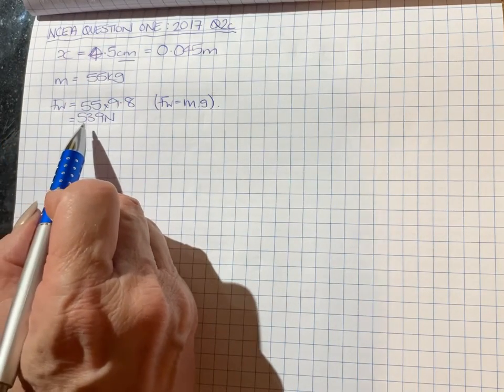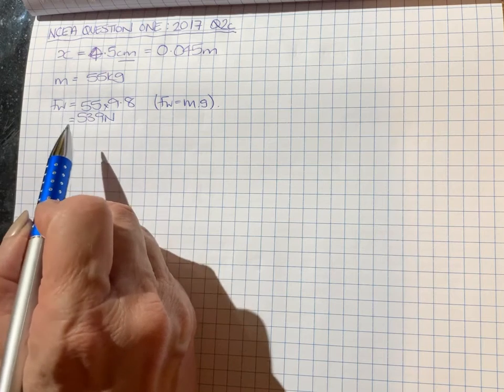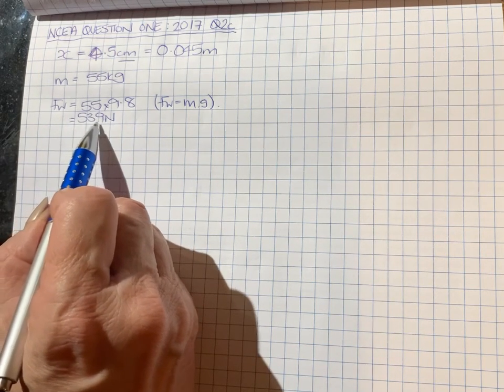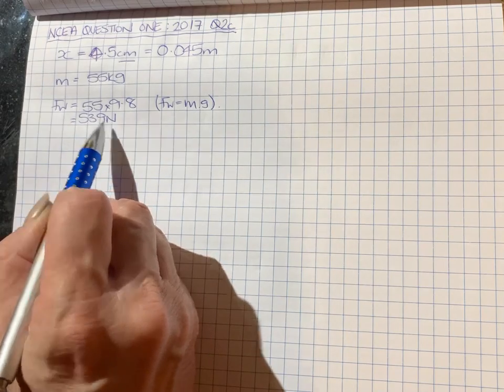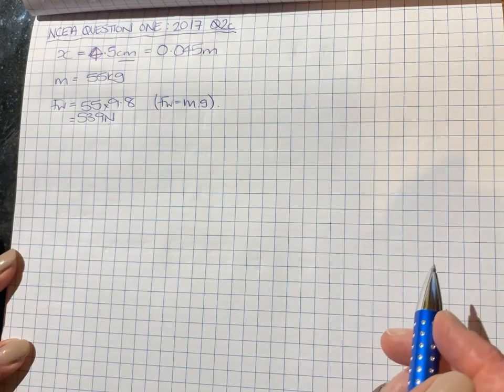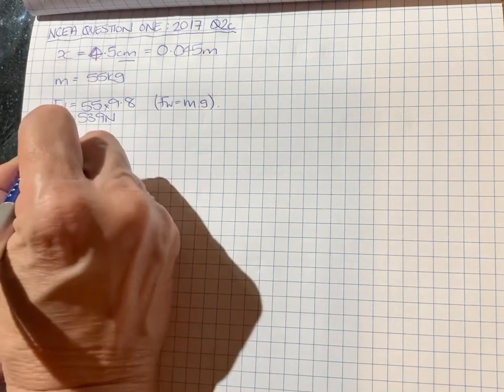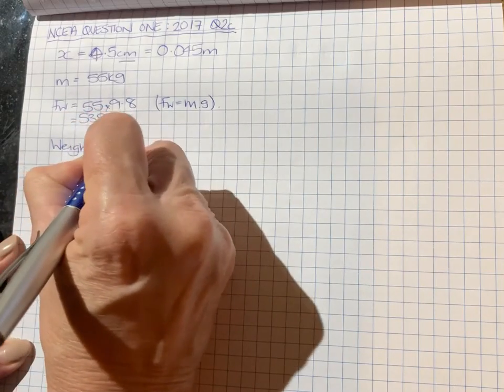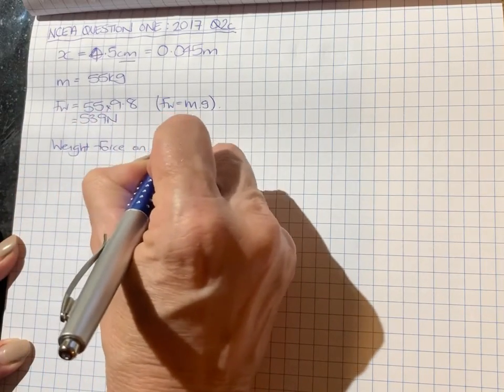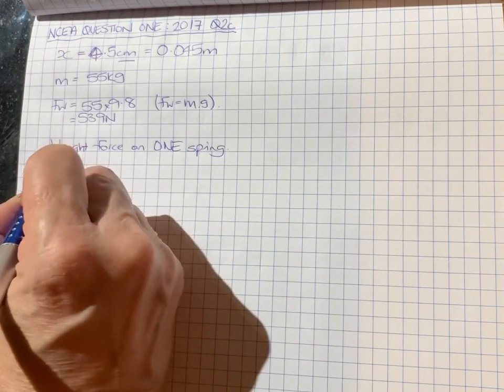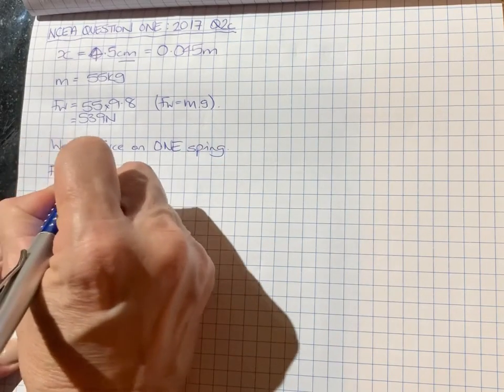Now, the interesting thing about this question, and the thing that makes it tricky, is that this 539 newtons, which is Sarah's weight force, is distributed over all 20 of the springs in the mattress.